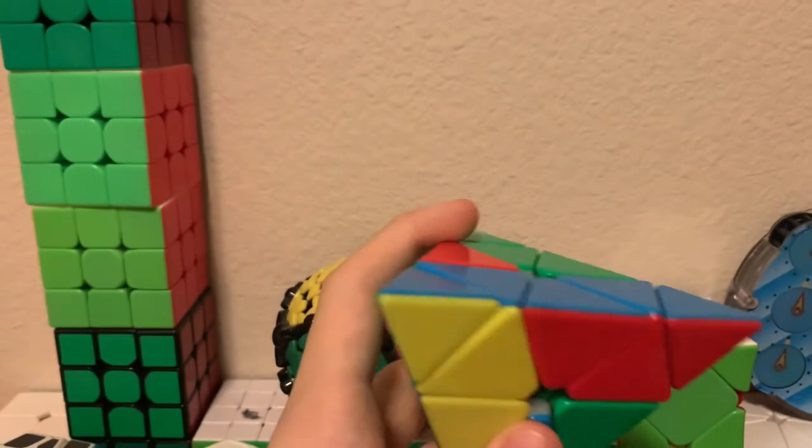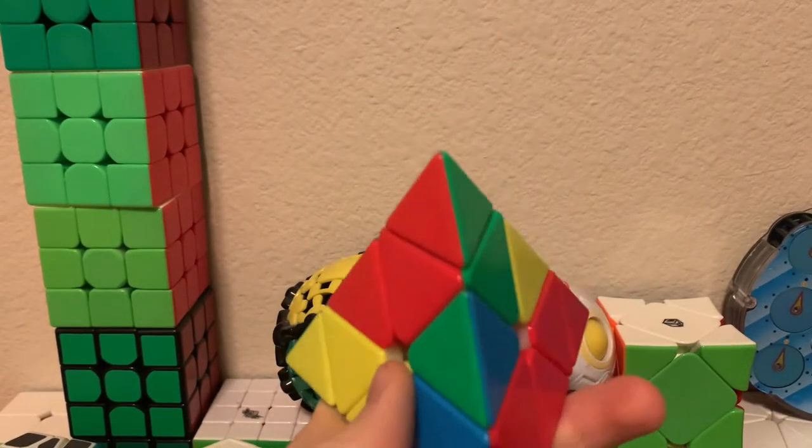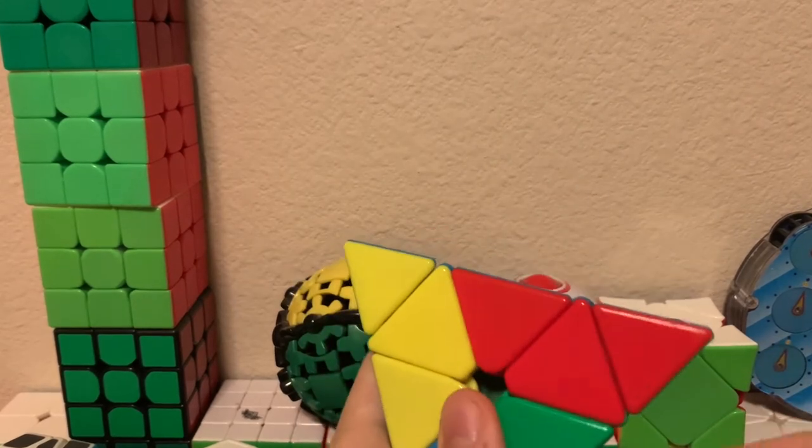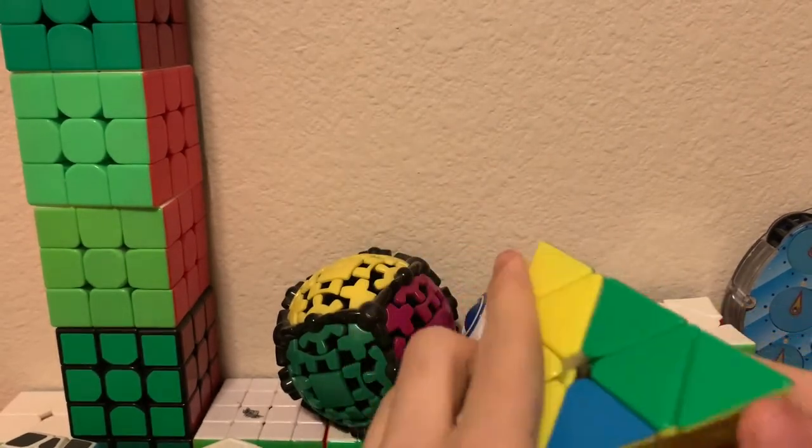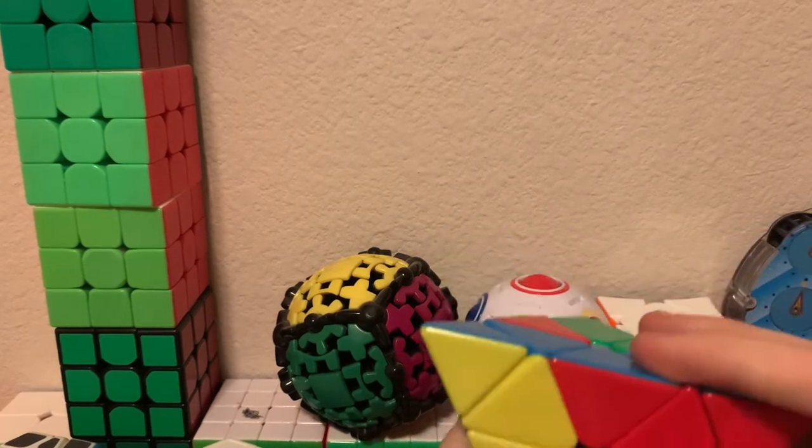In 2007 Michael Goplia developed a new method called half backbone where you orient two of the edges and this takes a lot less inspection time. For example, for this we can orient this edge for the red side and this one's already oriented.